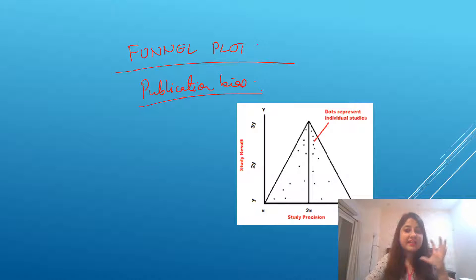That means, whether the studies that you have included in your systematic review or meta-analysis, what is the quality of those studies. So that is given by a funnel plot which represents publication bias.